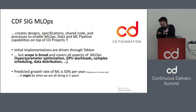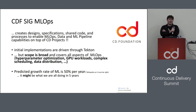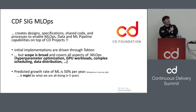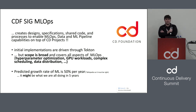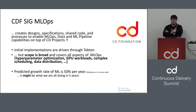A final thought: our predicted combined aggregate growth rate for ML is 50% per year. This is like Moore's law. So you should probably pay attention — this might be what we're all doing in five years.